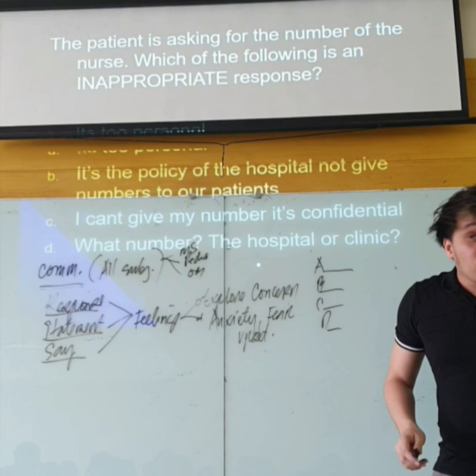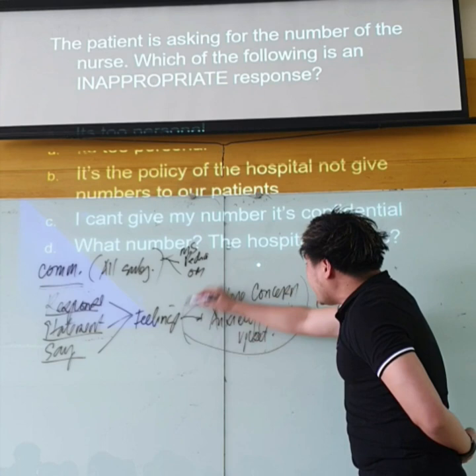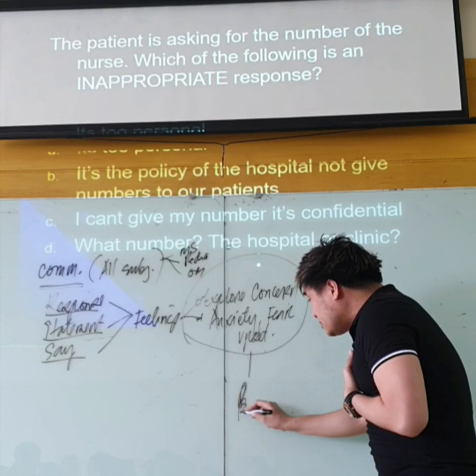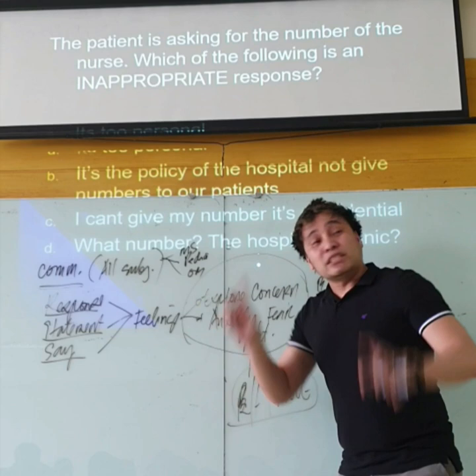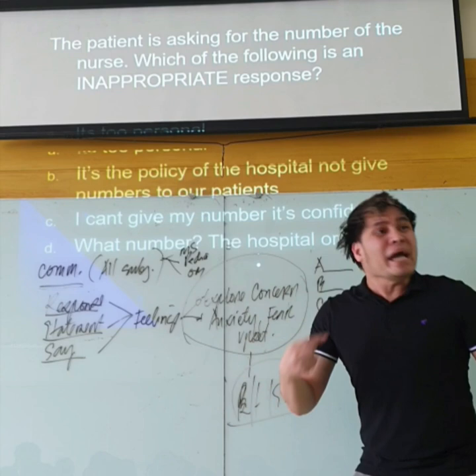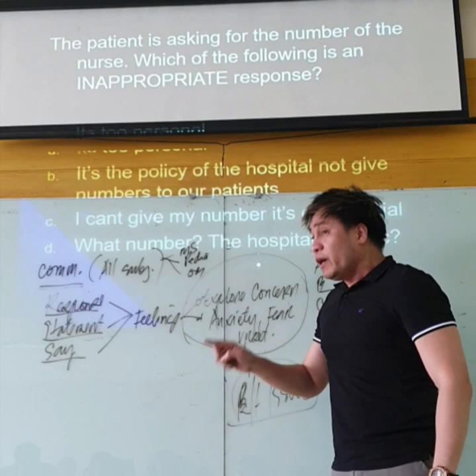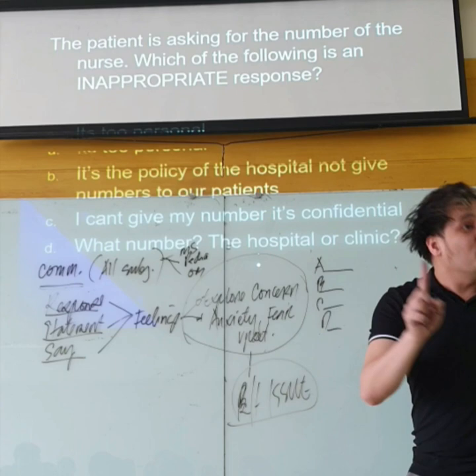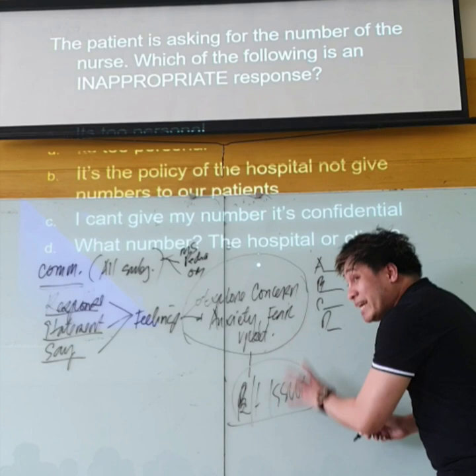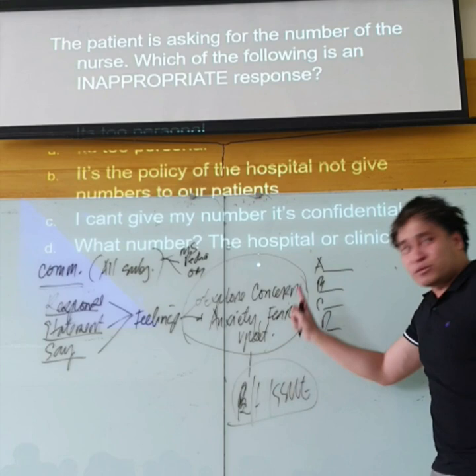When you will take the nursing exam, even if a choice addresses feelings, you need to ask yourself first: is that feeling related to the issue? Because there is a possibility that the statement addresses feelings, but sometimes the issue is not related. For example, the issue is: 'Help! My house is burning!' Which of the following is the most appropriate response of the nurse? You have to make sure that before you take the choice, the response is related to that issue. Ask yourself: is this related to the issue? If not, then look for another choice. It should always be related to the issue.